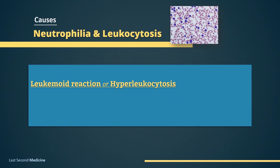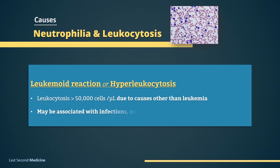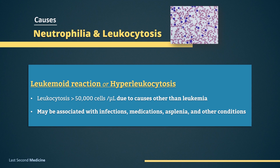It shall be noted that leukocytosis with values in excess of 50,000 cells per microliter, due to causes other than leukemia, is termed a leukemoid reaction or hyperleukocytosis. Leukemoid reaction may be associated with infections, medications, asplenia, and other conditions.